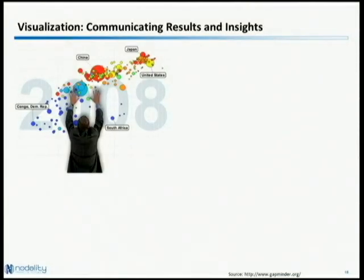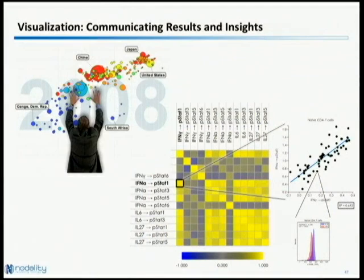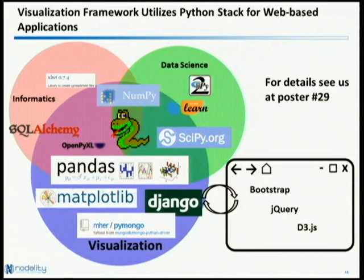On visualization: a professor I worked with in graduate school always told me it's not science until you tell someone else about it, and one of the best ways is visually. I'm not sure how many of you have seen Hans Rosling's TED talks — a great inspiration for how you can extract and communicate insight using interactive visualization. We're starting to realize this at Nodality: we've built a web framework where users can drill down from a high-level heat map showing correlations between protein signals all the way down to data for every single cell. We built this using Django and JavaScript technologies — see us at poster 29.